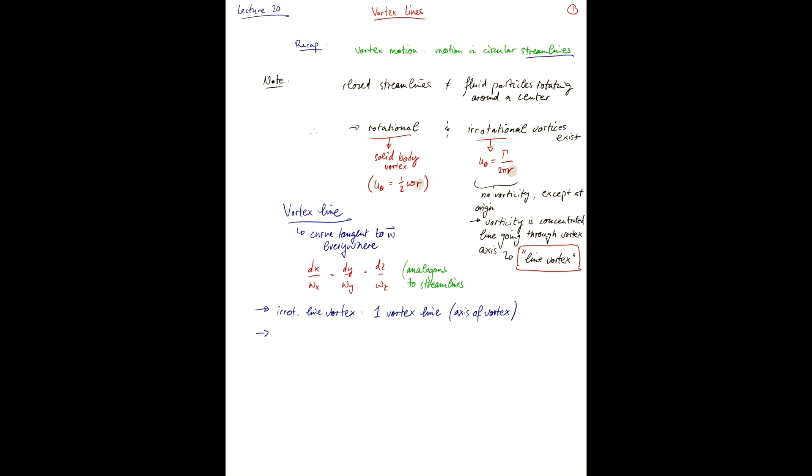For a solid body vortex, we actually have all the lines that are perpendicular to the flow plane are vortex lines. Because this is a rotational vortex, that means the particles are always rotating. So all lines perpendicular to the flow plane.